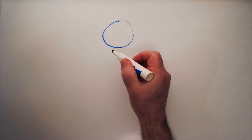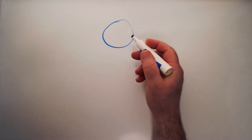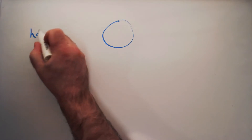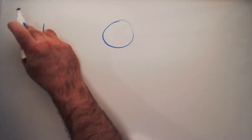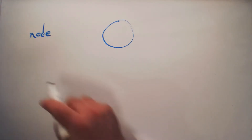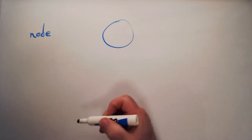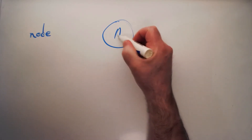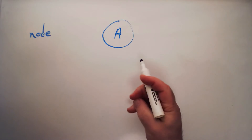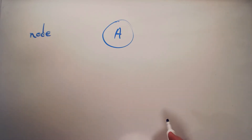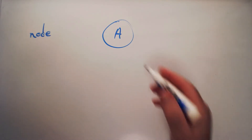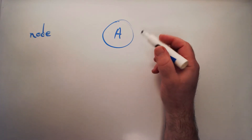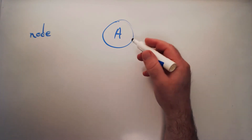A tree is a set of nodes, and when we draw trees it's very common to draw the nodes as circles. A node looks like a circle, and usually we'll put some sort of an indicator in there that represents its value, like the letter A. Much like we saw with a linked list, a node is a place that holds a value and other information that describes its relationship to other nodes.